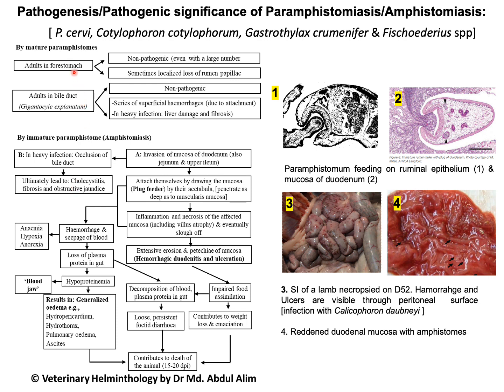For the adult parasite, they are located in the forestomach, particularly in the rumen and reticulum. They are always non-pathogenic or non-harmful, even with a large number of parasitic load in the predilection site.